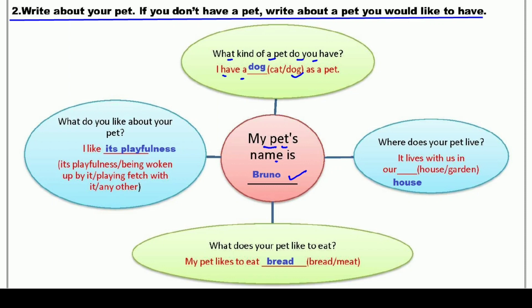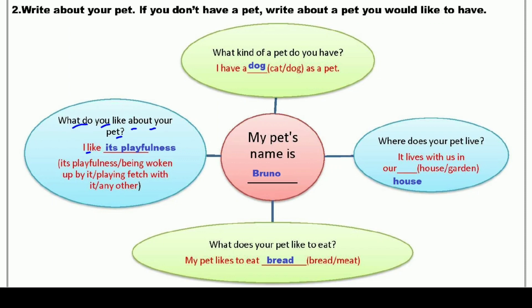پھر اس کے بعد ہے: What do you like about your pet? آپ کو اپنے pet کے بارے میں کیا پسند ہے؟ I like — نیچے کچھ words لکھے ہیں آپ کی help کے لئے، آپ ان میں سے choose کر سکتے ہیں: its playfulness یعنی اس کے کھیلنے کی عادت، being woken up by it یعنی اس کے ذریعے جگانا، یا playing fetch with it۔ میں نے for example لکھا: I like its playfulness.